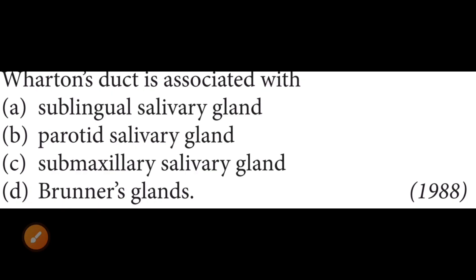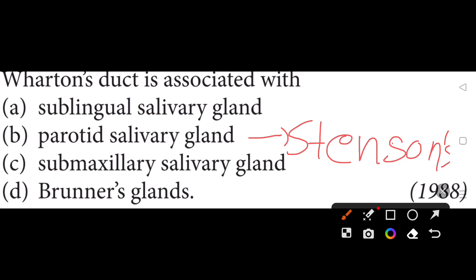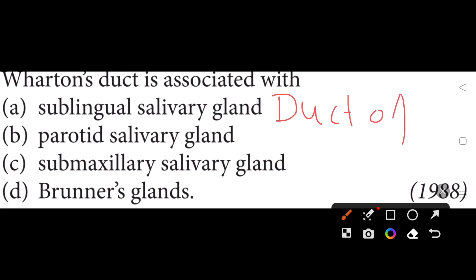Wharton's duct is associated with the submaxillary salivary gland. The option will be C, which is correct. Stensen's duct is associated with the parotid salivary gland, and the duct of Rivinus is associated with the sublingual gland.